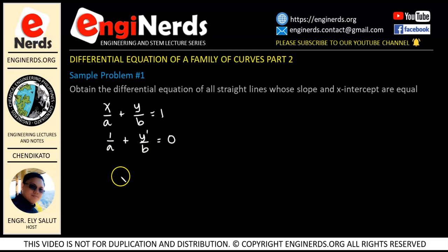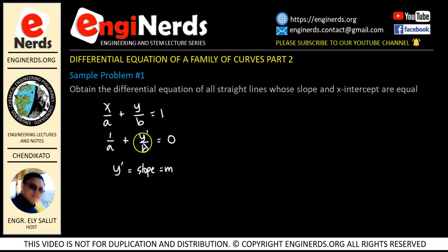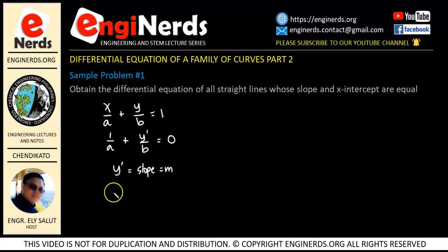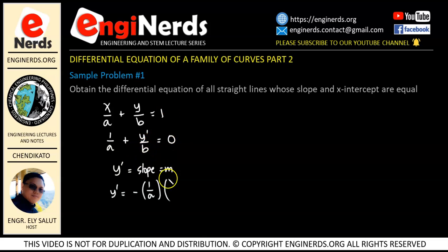When working with a straight line, we know that y prime is equal to the slope of our line, also written as m. So if we are going to isolate y prime, we will be able to identify the value of our slope. Transposing 1 over a to the right side and moving denominator b, our y prime is equal to negative b over a, which is the slope.